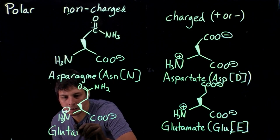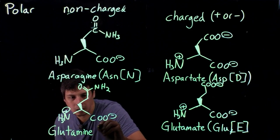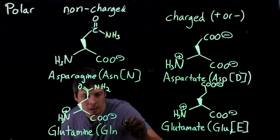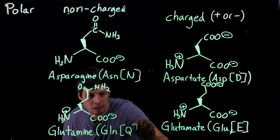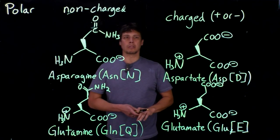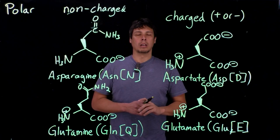Three-letter code is GLN. The one-letter code is Q. Okay. And so these are our first four polar amino acids.